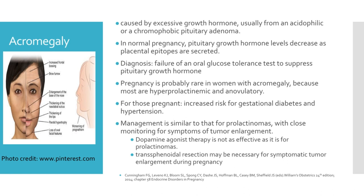Acromegaly is caused by excessive growth hormone, usually from an acidophilic or chromophobic pituitary adenoma. In normal pregnancy, pituitary growth hormone levels decrease as placental epitopes are secreted. The diagnosis is failure of an oral glucose tolerance test to suppress pituitary growth hormone. Pregnancy is probably rare in women with acromegaly because most are hyperprolactinemic, anovulatory, and therefore infertile. But for those women who are pregnant, they have increased risk of gestational diabetes and hypertension. The management is similar to that for prolactinomas with close monitoring for symptoms of tumor enlargement. Dopamine agonist therapy is not as effective as it is for prolactinomas, and transsphenoidal resection may be necessary for symptomatic tumor enlargement during pregnancy.